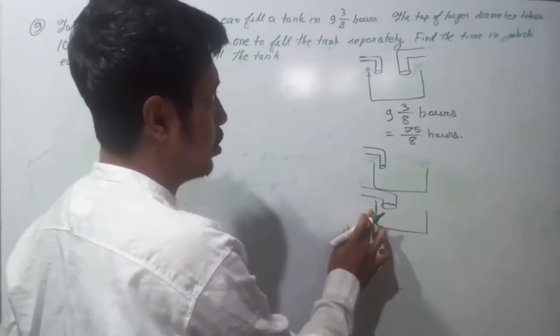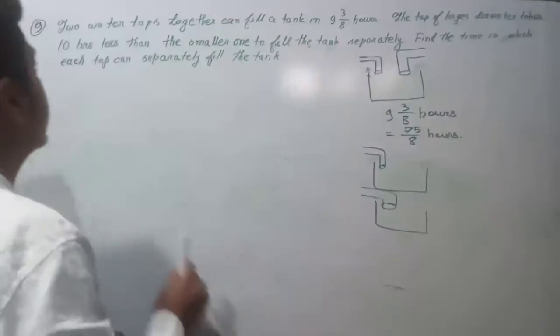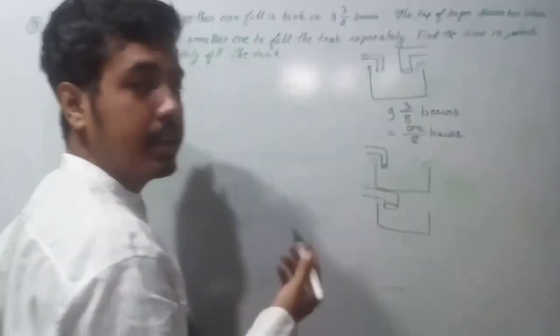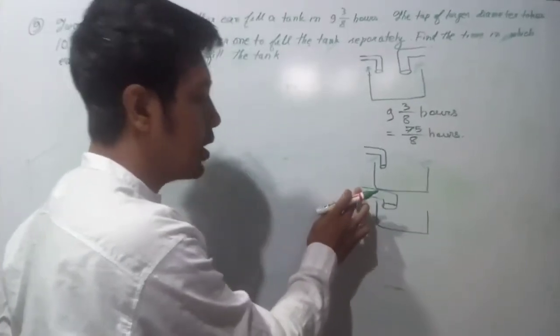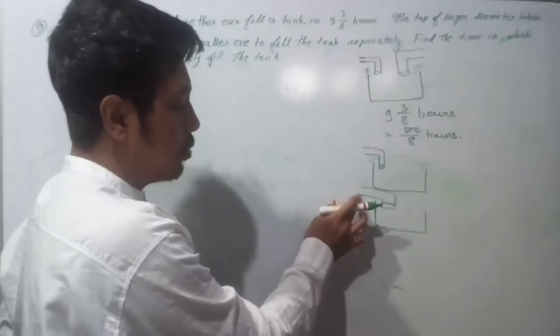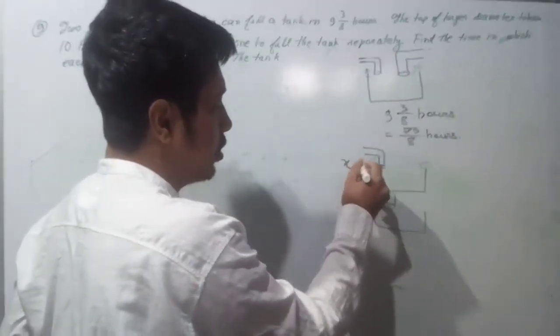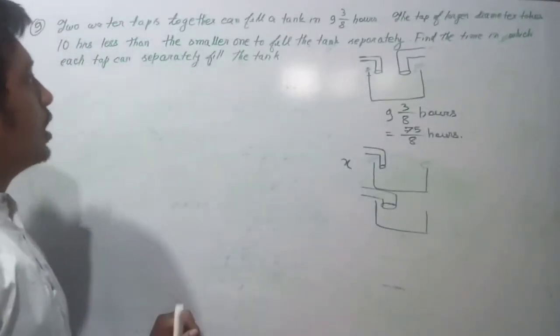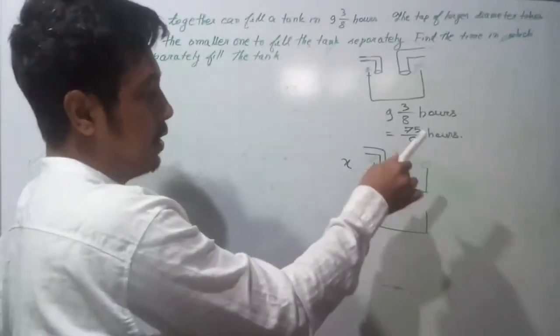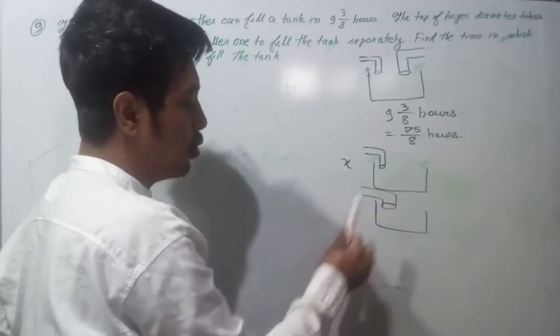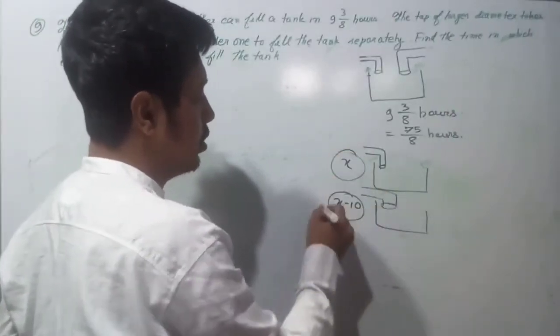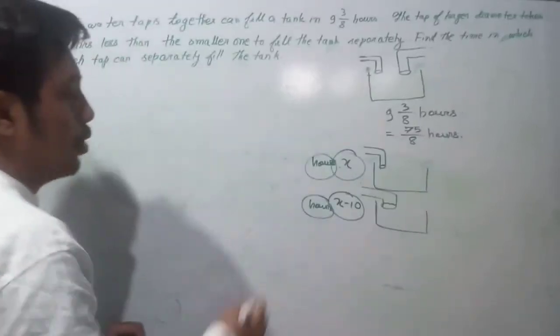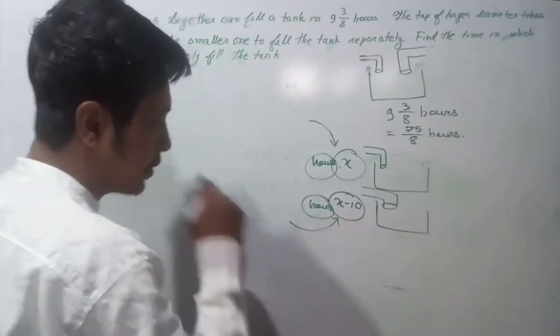The tap of larger diameter takes 10 hours less than the smaller one to fill the tank separately. The larger tap takes 10 hours less, so if the smaller tap takes x hours, the larger takes x minus 10 hours.